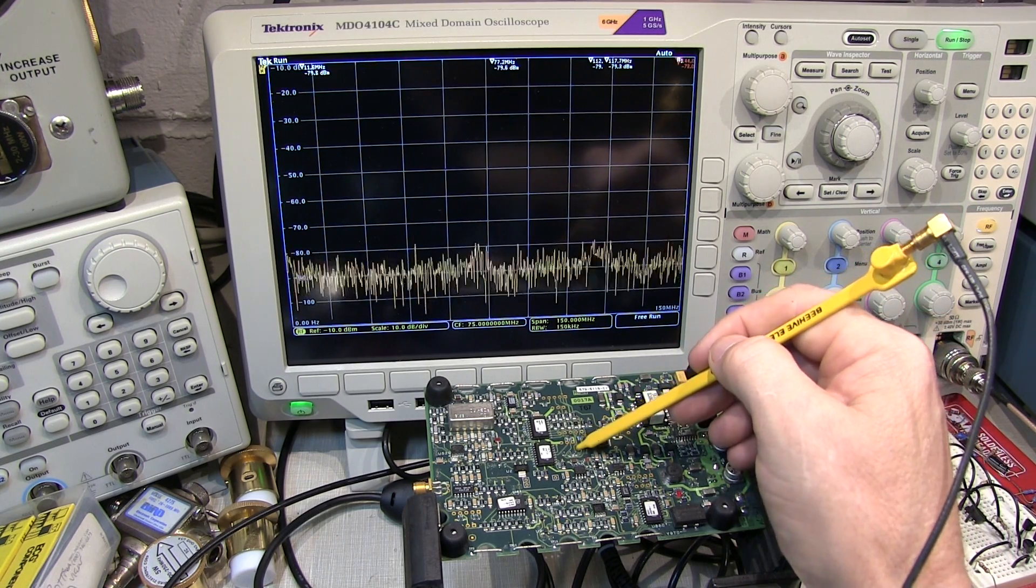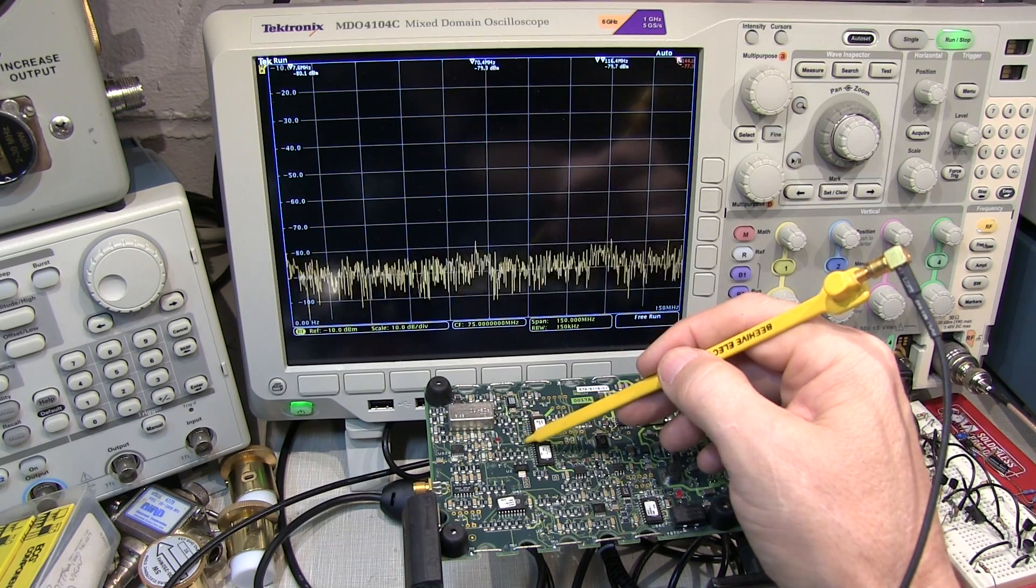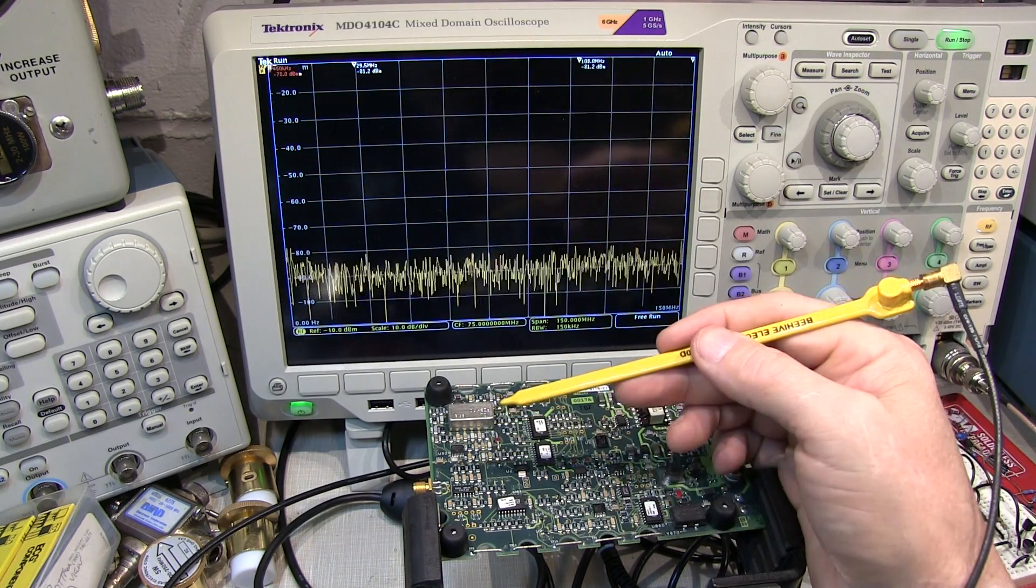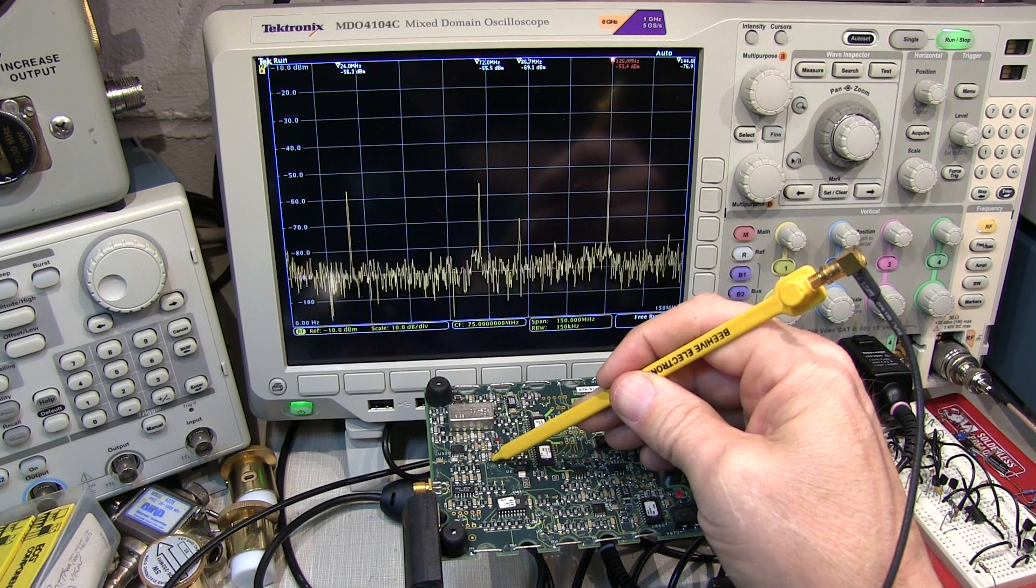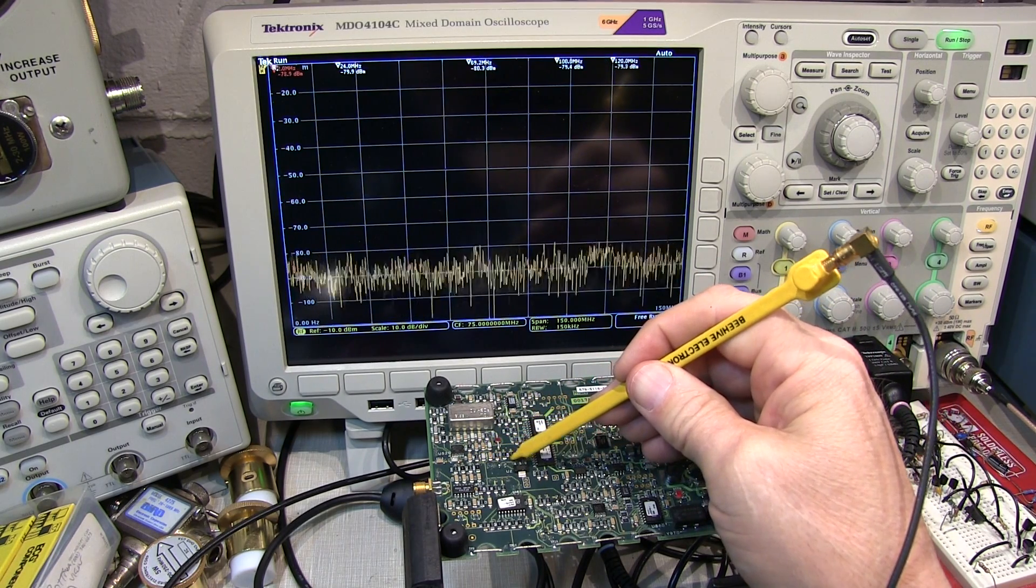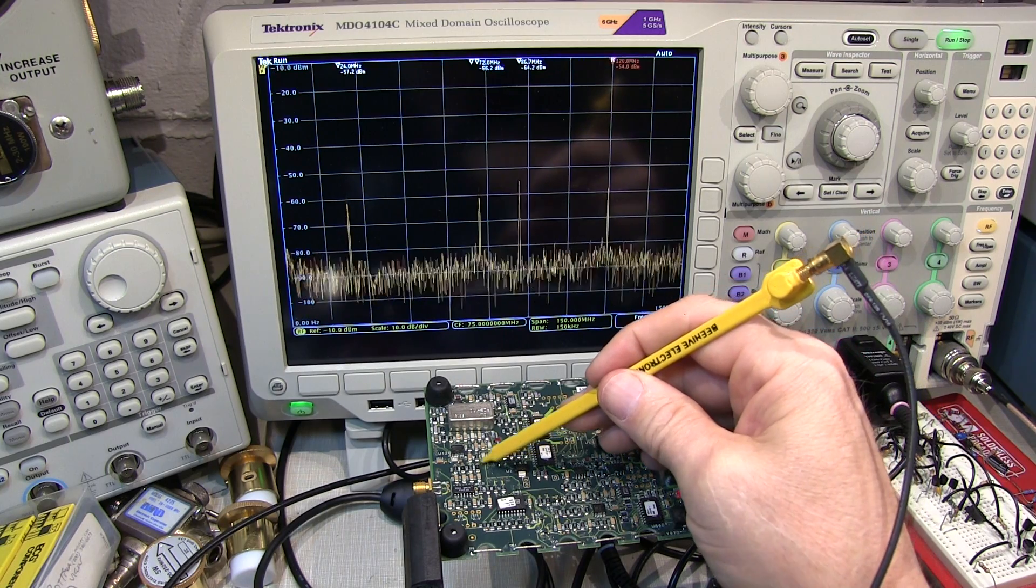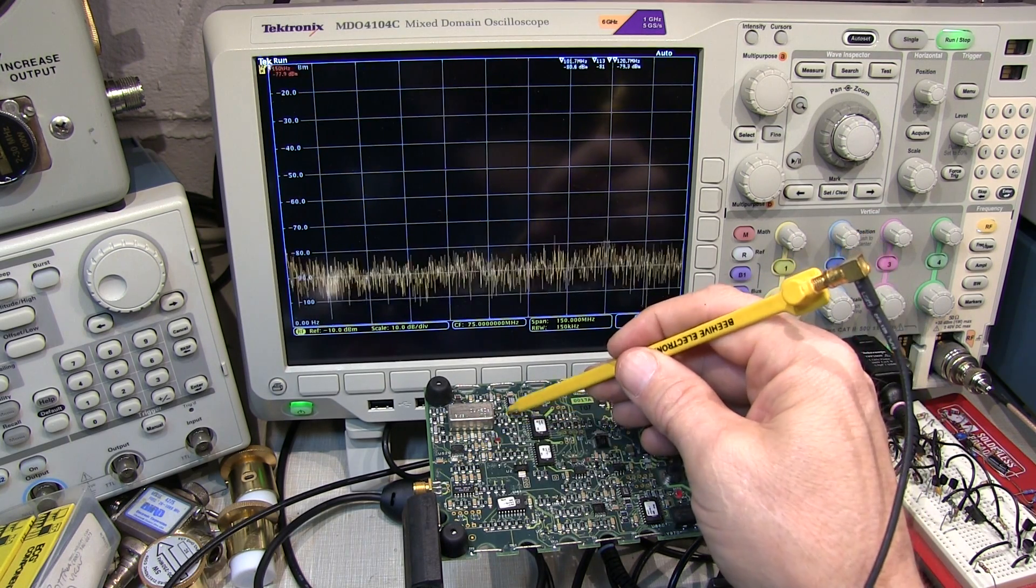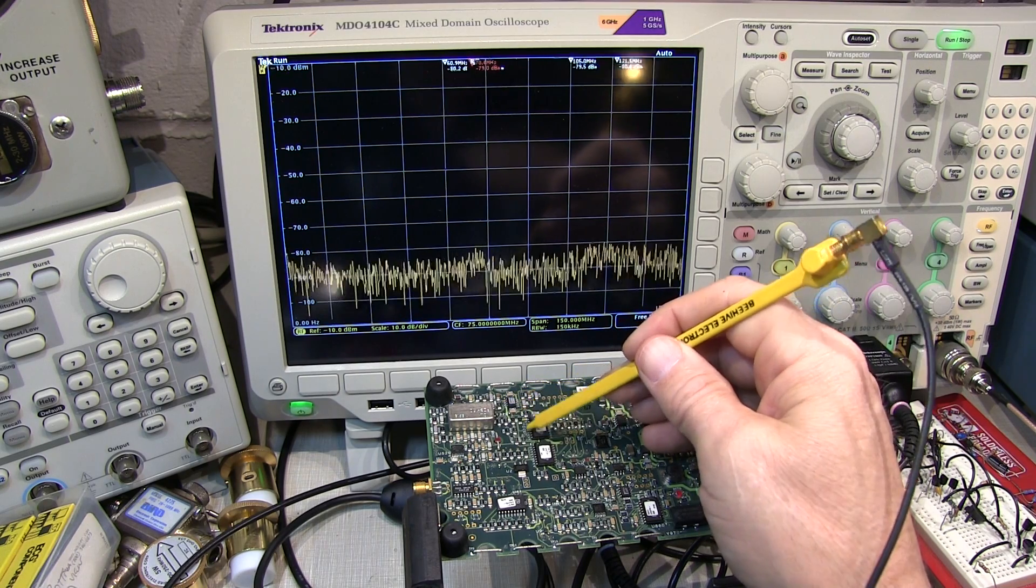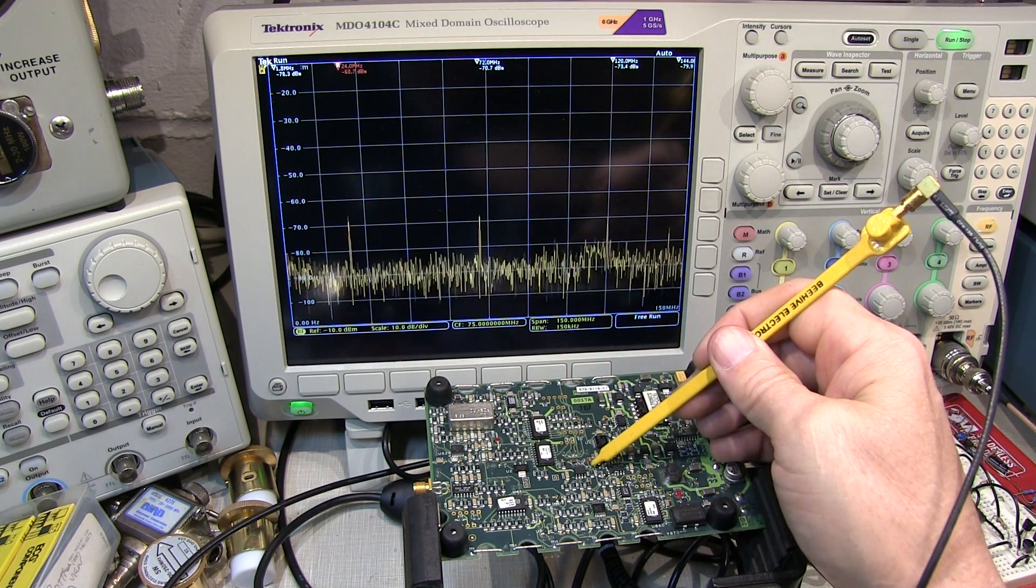If you've got a lot of changing current flowing through a power supply, an E field probe isn't going to see that, because there's generally not much of a voltage fluctuation in the power supply. But the amount of current that's flowing in that power supply trace might vary quite considerably. And that's where a magnetic field probe or H field probe might be more appropriate.